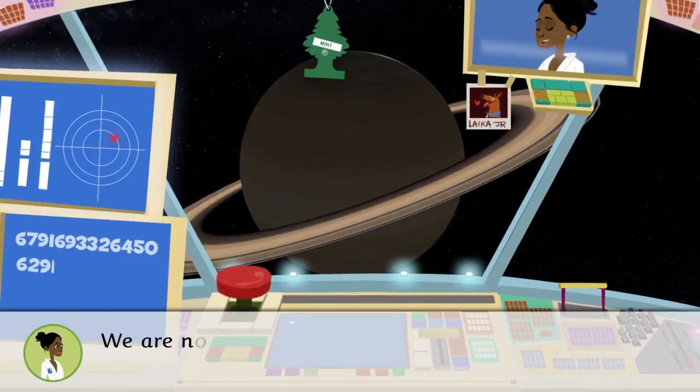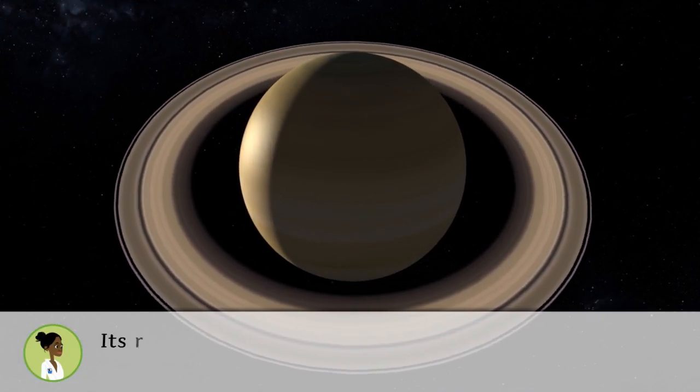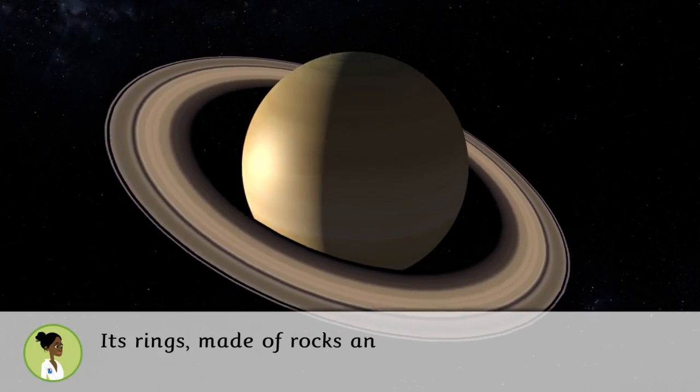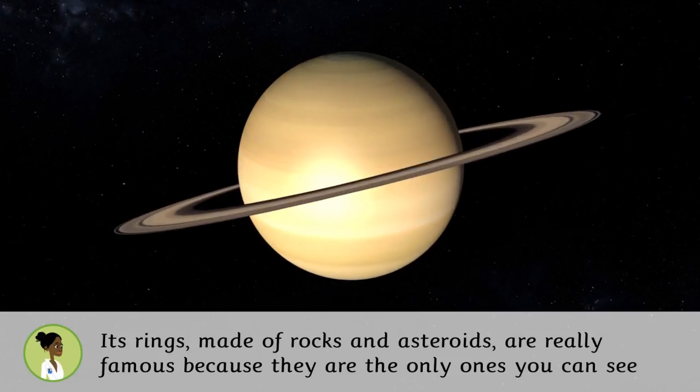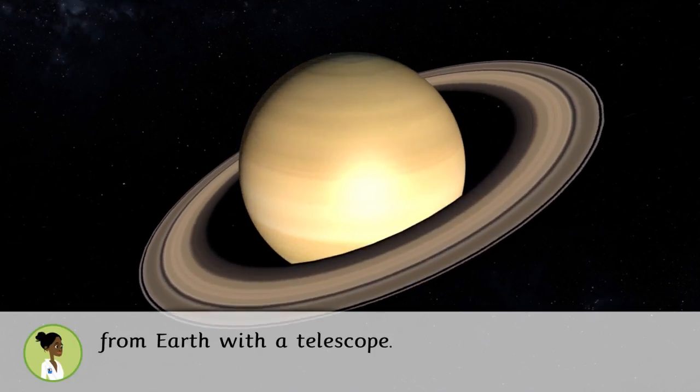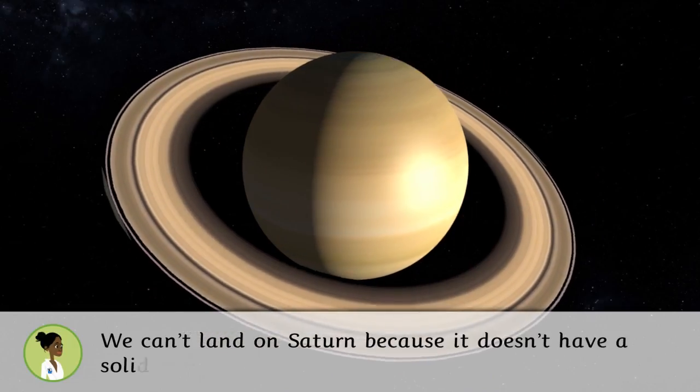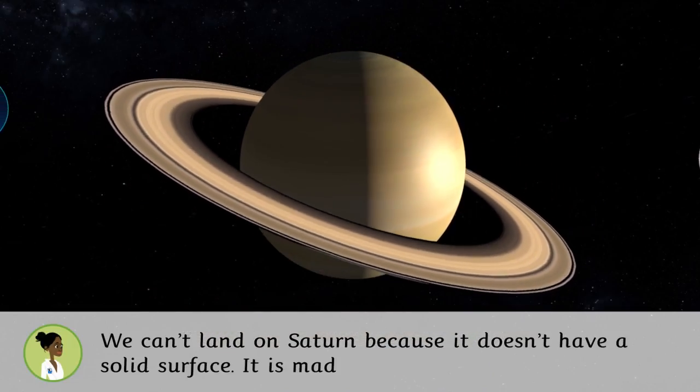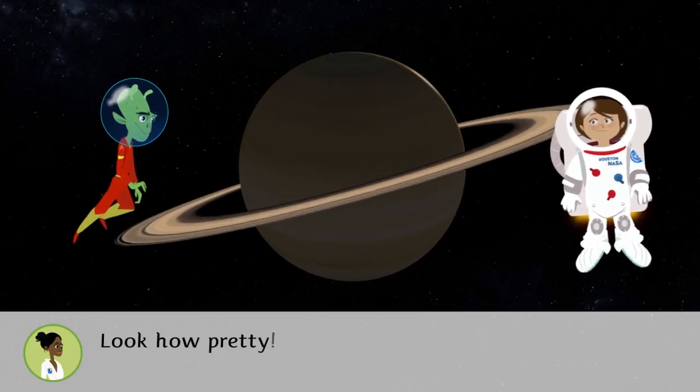We are now on Saturn, the ring planet. Its rings made of rocks and asteroids are really famous because they are the only ones you can see from Earth with a telescope. We can't land on Saturn because it doesn't have a solid surface. It is made of liquids and gases. Look how pretty!